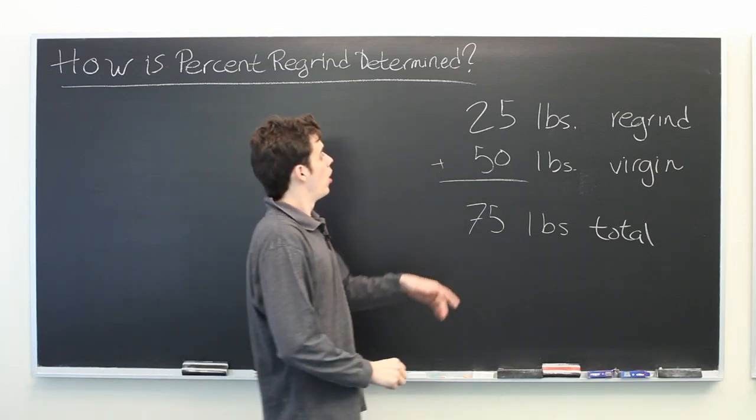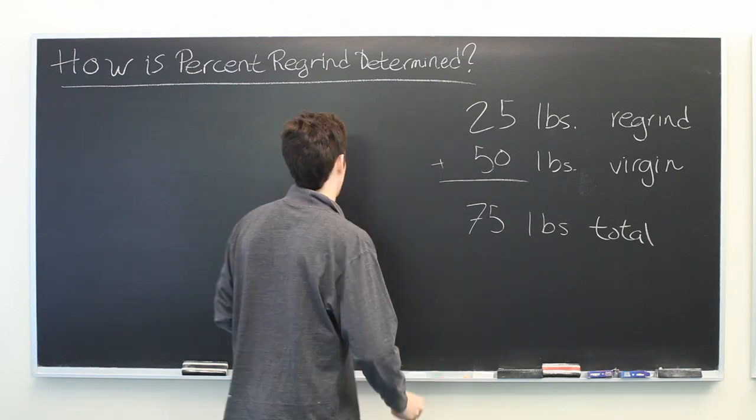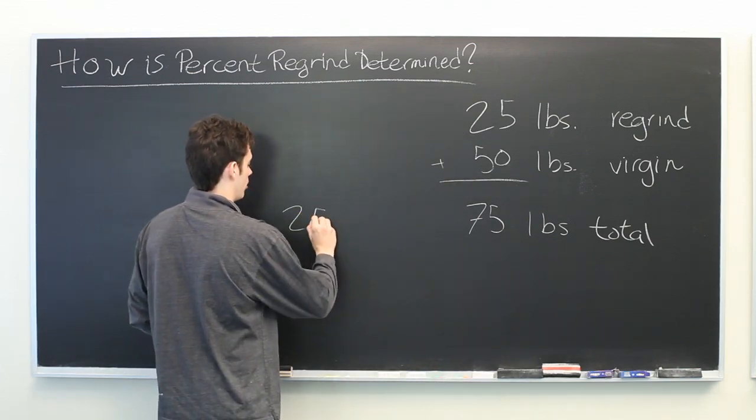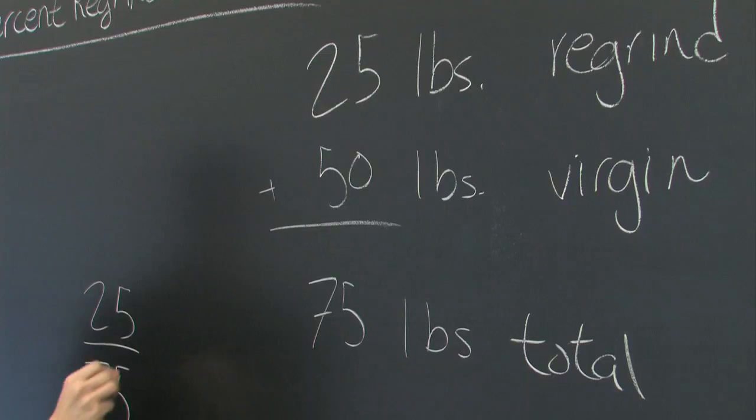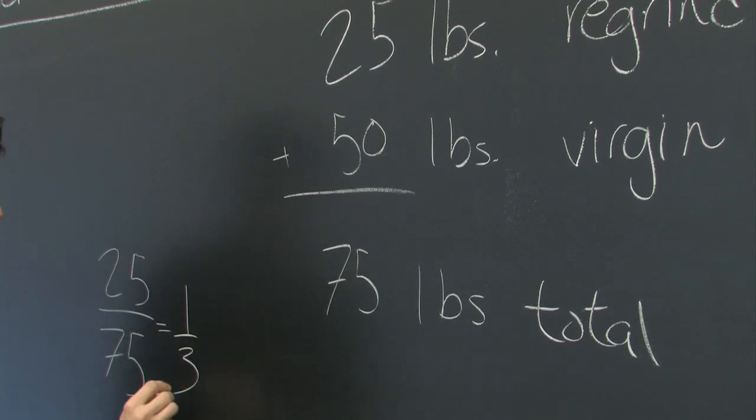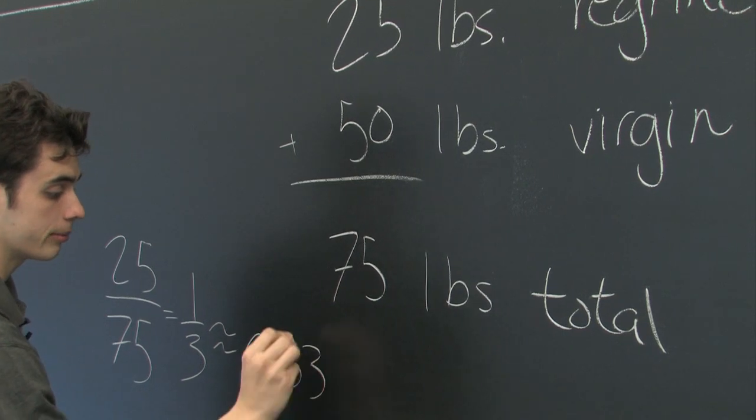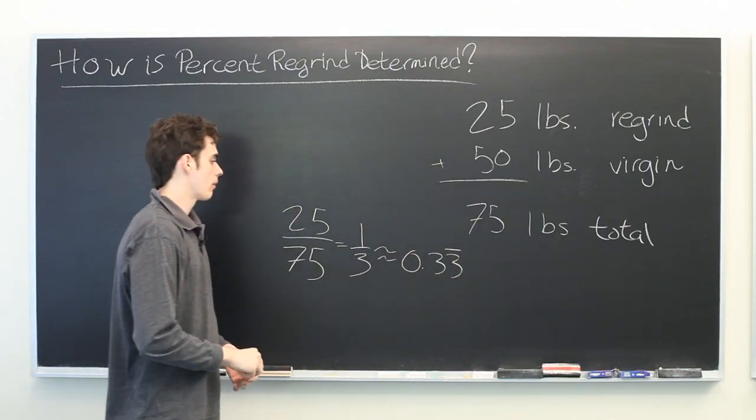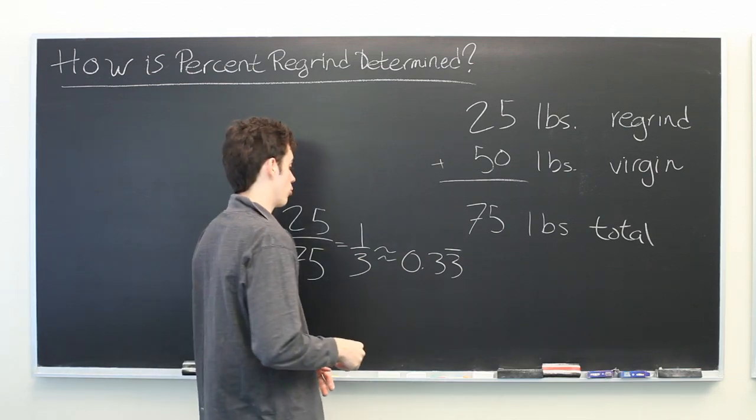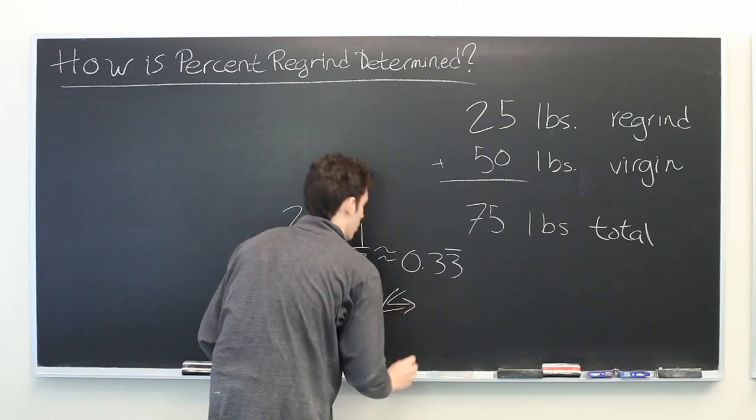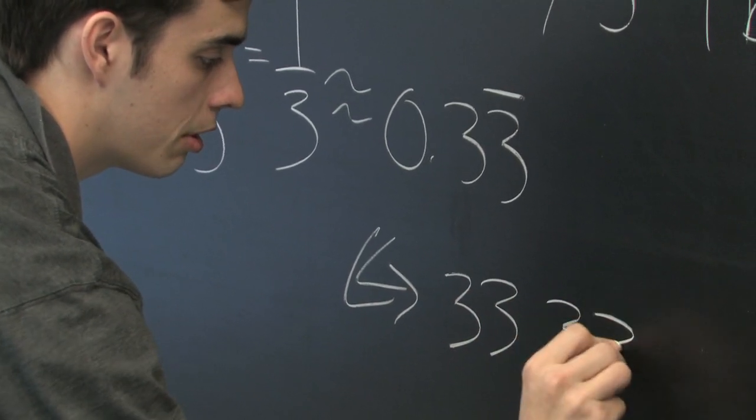From here, we divide the weight of the regrind by the weight of the total. So 25 divided by 75, which gives us one third or 0.33 repeating. From here, in order to convert from a decimal to a percentage, we simply multiply by 100, which gives us 33.33%.